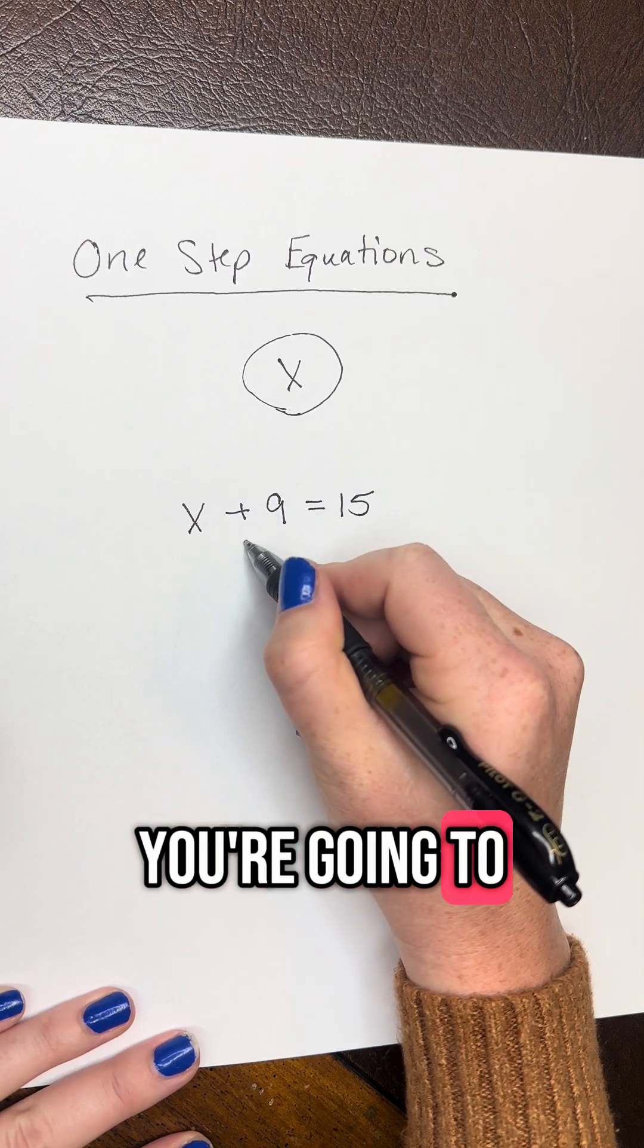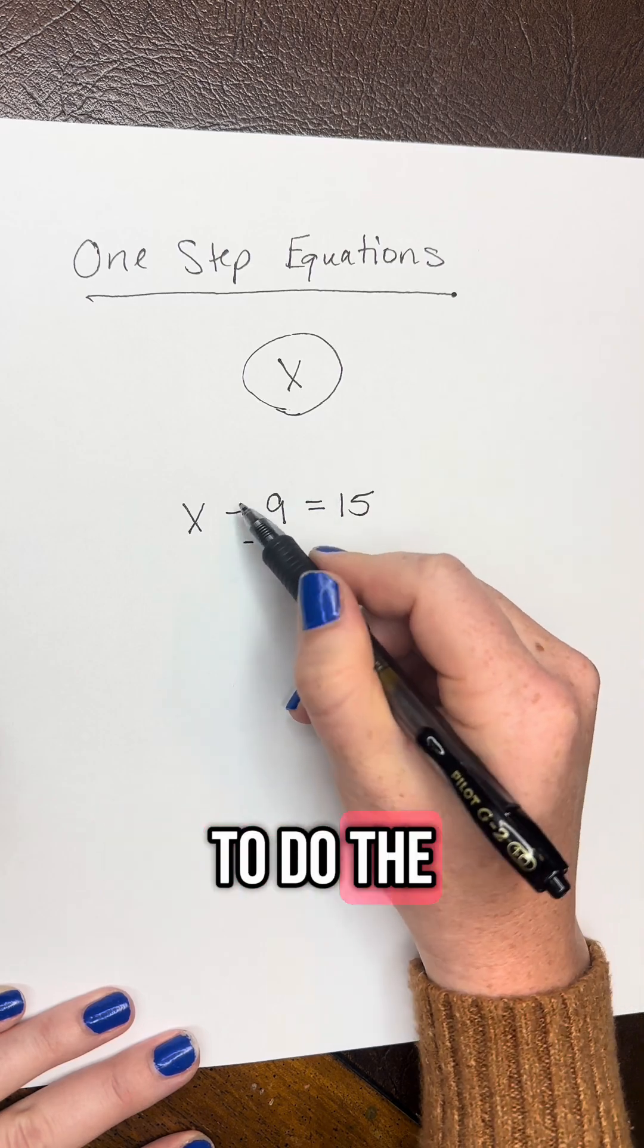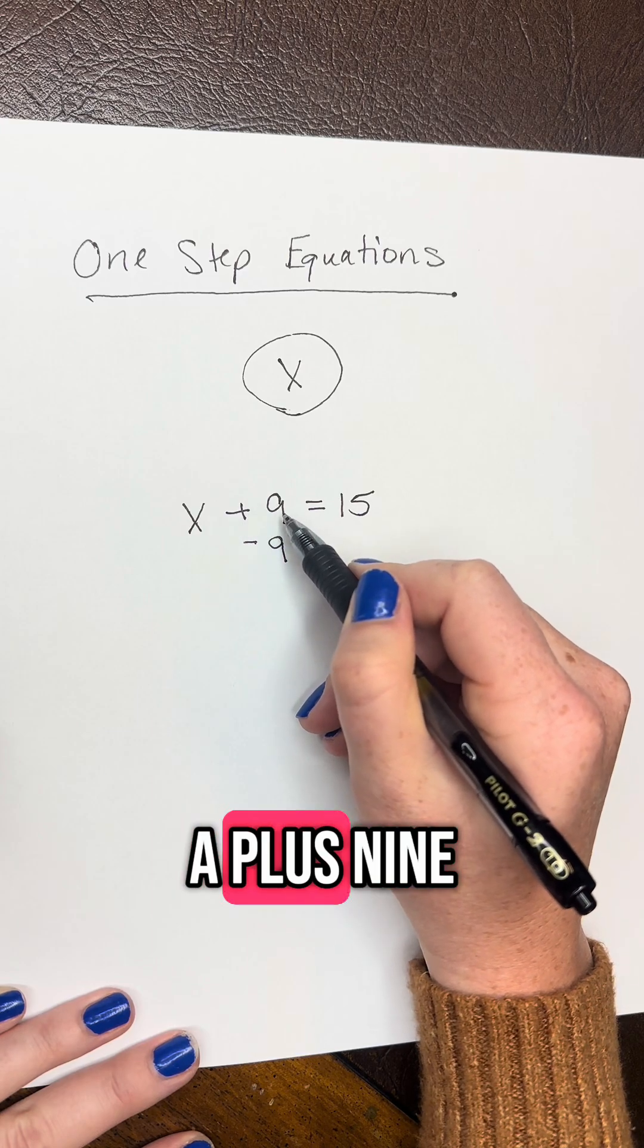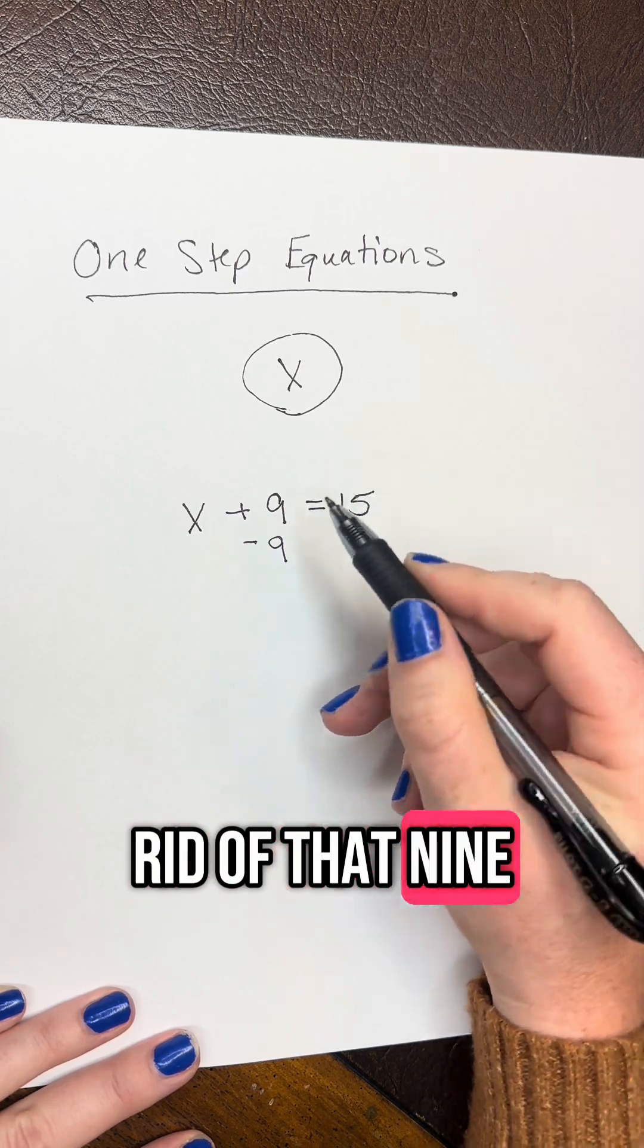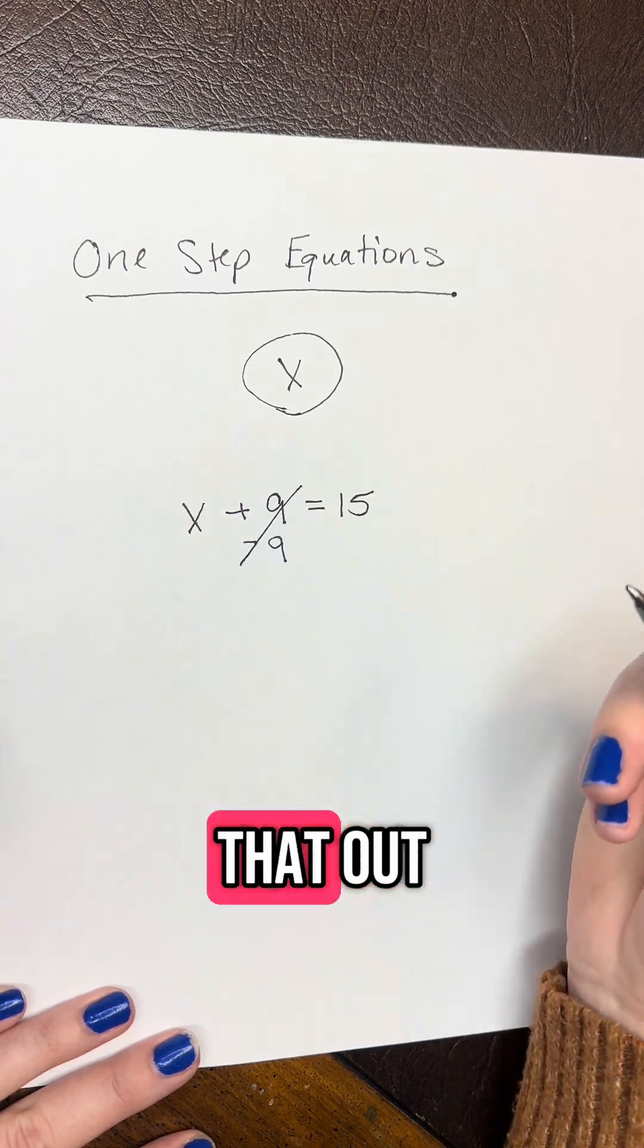So you're going to subtract 9 here because I'm going to do the opposite of what I see here. So I see a plus 9, I got to get rid of that 9. So I'm going to do minus 9 and then cross that out.